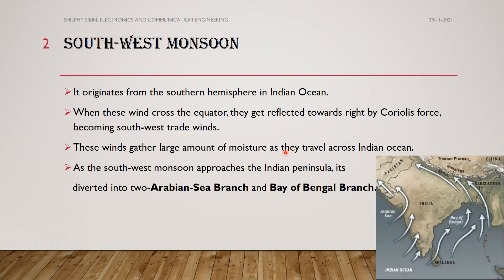As the Southwest Monsoon approaches the Indian Peninsula, it is divided into two branches. One is the Arabian Sea branch and the other is the Bay of Bengal branch.